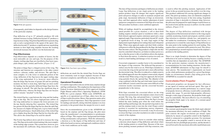Fixed pitch propellers are designed for best efficiency at one speed of rotation and forward speed. This type of propeller provides suitable performance in a narrow range of airspeeds; however, efficiency would suffer considerably outside this range. To provide high propeller efficiency through a wide range of operation, the propeller blade angle must be controllable. The most effective way of controlling the propeller blade angle is by means of a constant speed governing system. The constant speed propeller keeps the blade angle adjusted for maximum efficiency for most conditions of flight. The pilot controls the engine RPM indirectly by means of a propeller control in the flight deck, which is connected to a propeller governor.